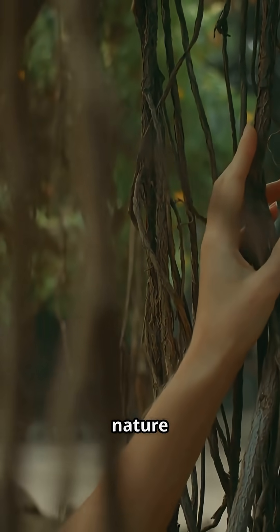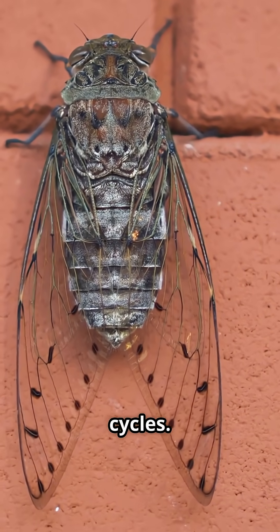Prime numbers literally show up in nature. Cicadas hide underground for 13 or 17 years, both primes, to avoid predators on regular cycles.